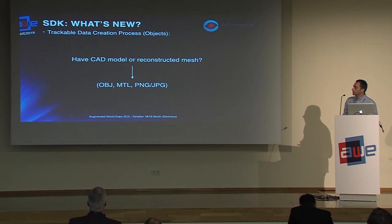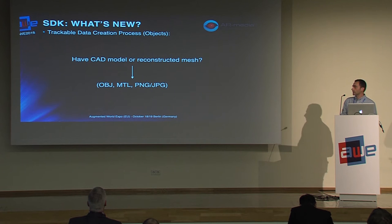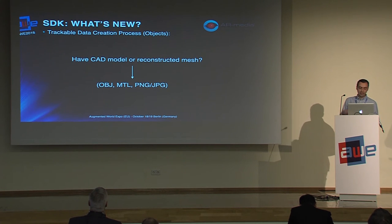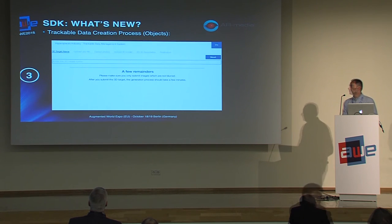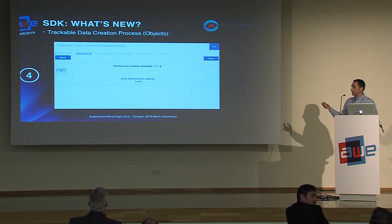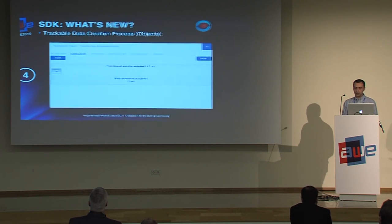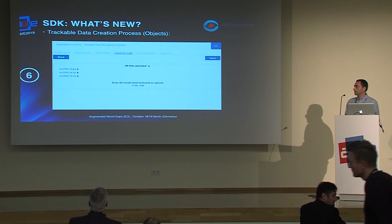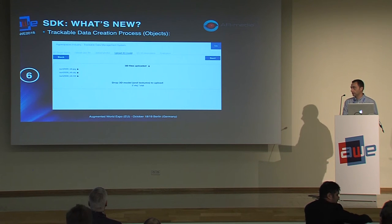Next, you can either use a CAD model if you have one, or reconstruct a mesh from the pictures you've taken. In both cases the output is an OBJ file, potentially with a material library and textures. Then you log in to our developer portal and upload the point cloud you reconstructed — or if you skipped that step, just upload the images directly. Then you upload the CAD model or reconstructed mesh as an OBJ file with textures.